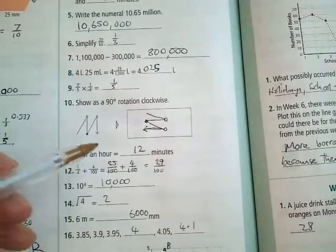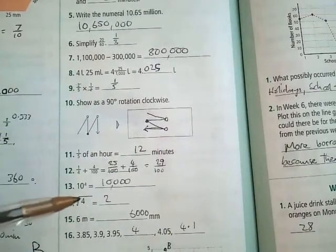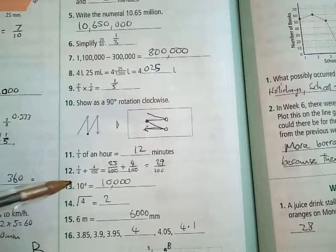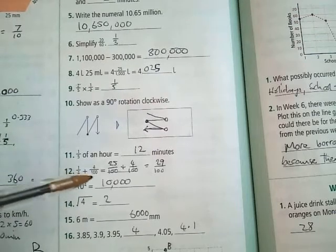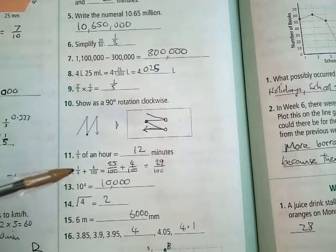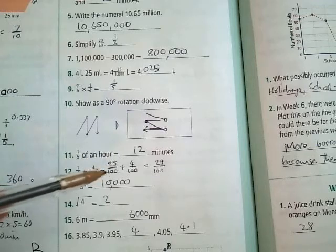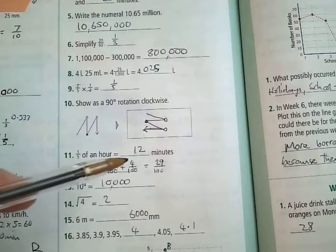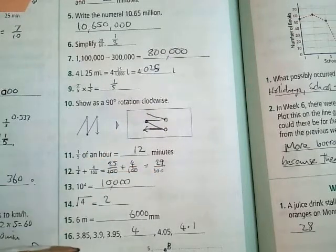Question 11: 1 fifth of an hour is 12 minutes. 60 divided by 5 is 12. Question 12: 1 quarter plus 4 over 100. You have to change that 1 quarter into 25 over 100. So 25 over 100 plus 4 over 100 is 29 over 100.